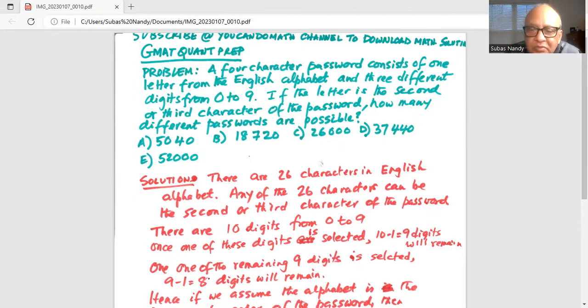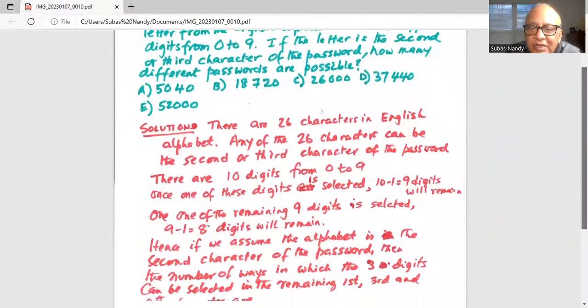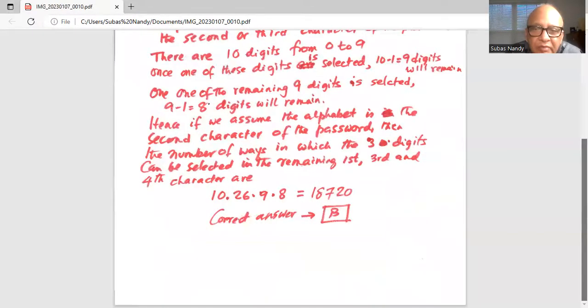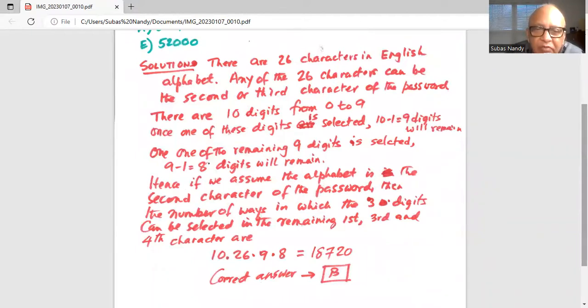Hence, if we assume the alphabet is the second character of the password, then the number of ways in which the three digits can be selected in the remaining first, third, and fourth positions. Remember, the second character is the alphabet.